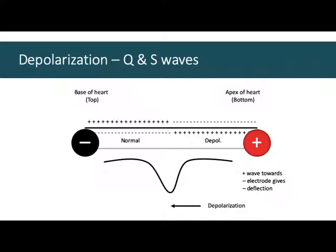So the Q and the S waves are indicative of this on our ECG trace. The cells depolarize away from the positive electrode.